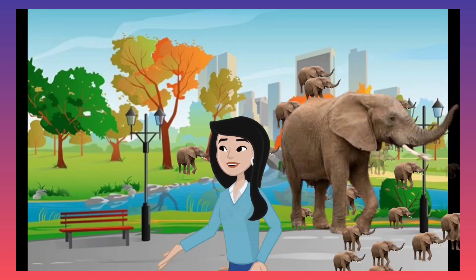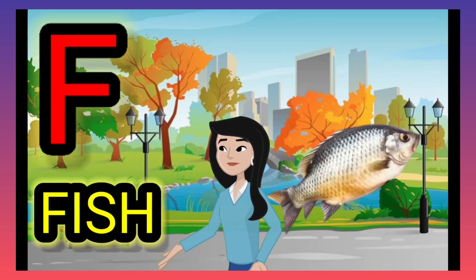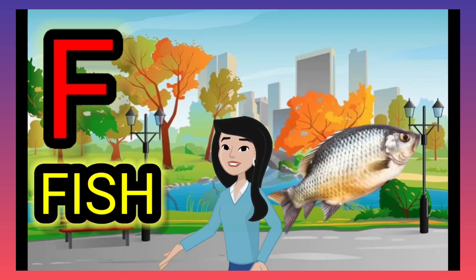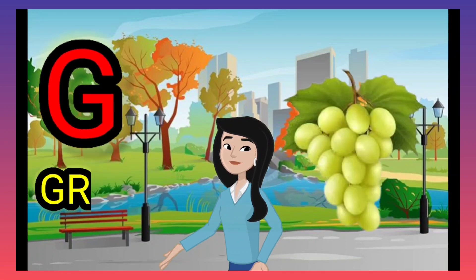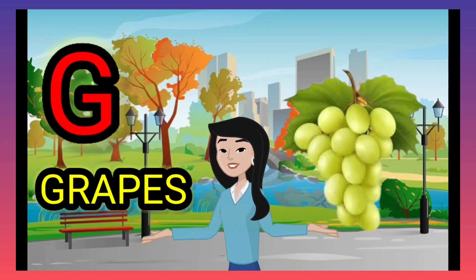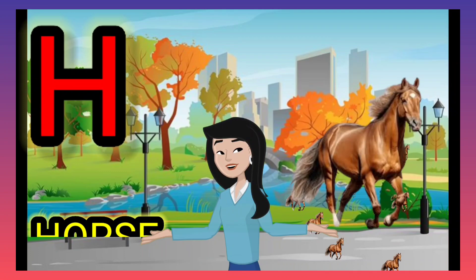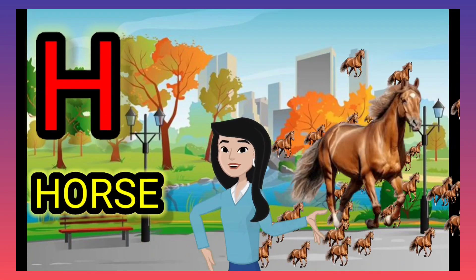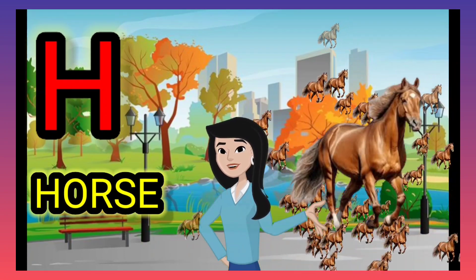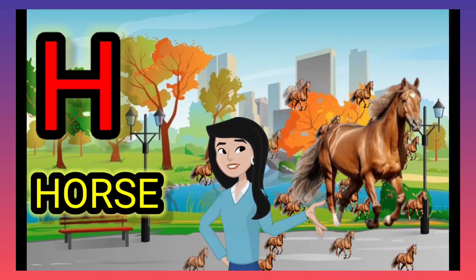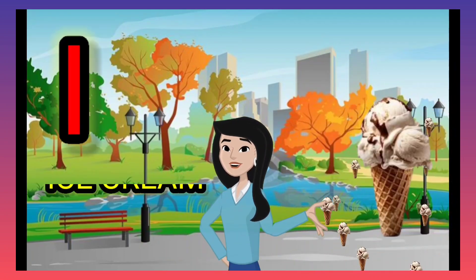E for elephant. F for fish. G for crab. H for horse.